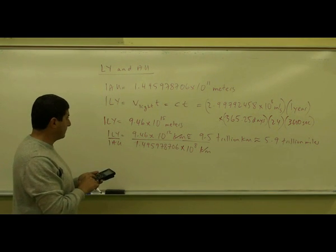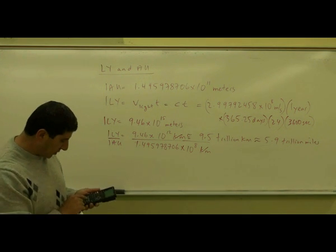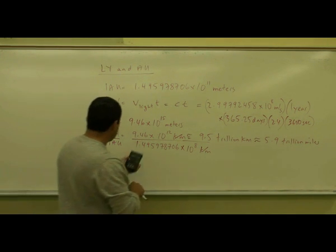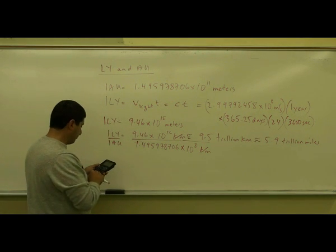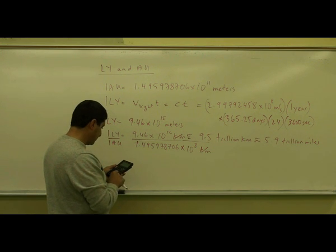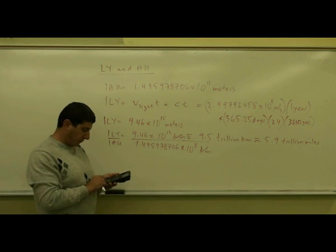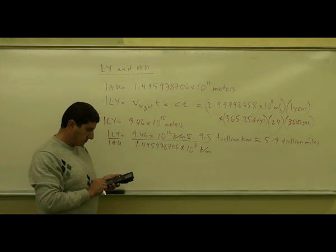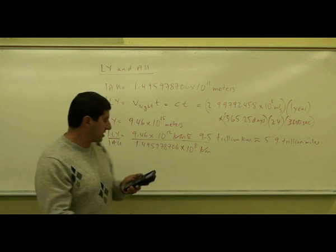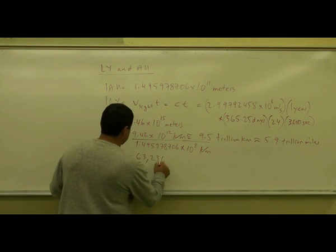So I have 9.46 divided by 1.495978706 times 10 to the 12 over 10 to the 8 is 10 to the 4. I get 63,236.